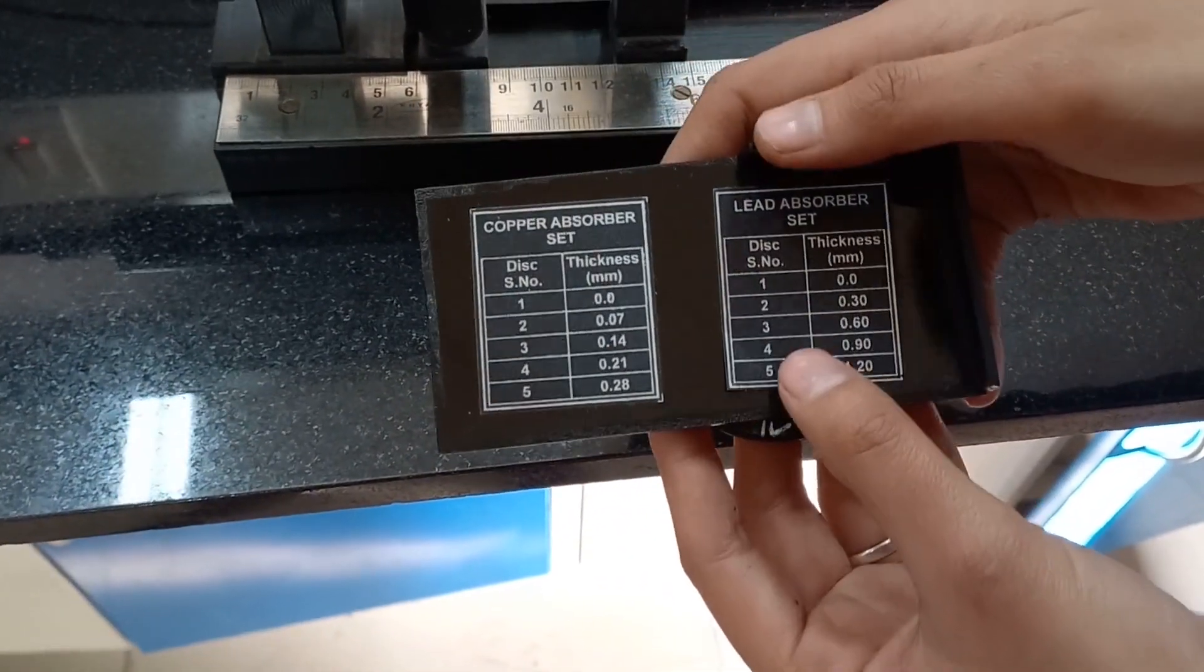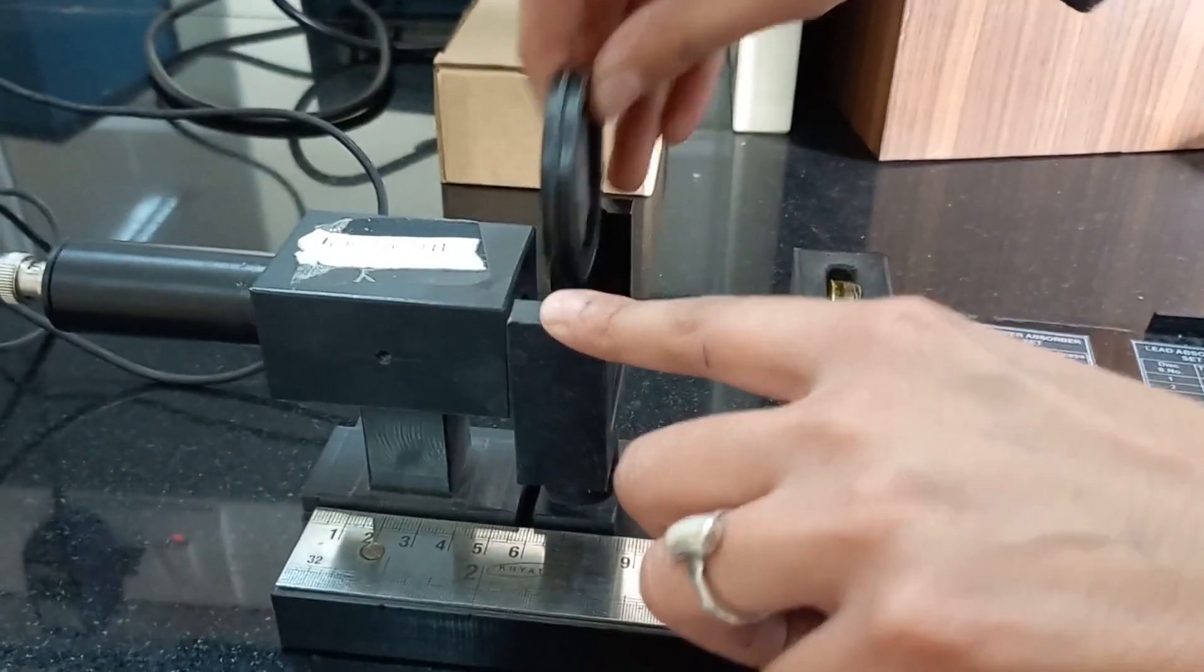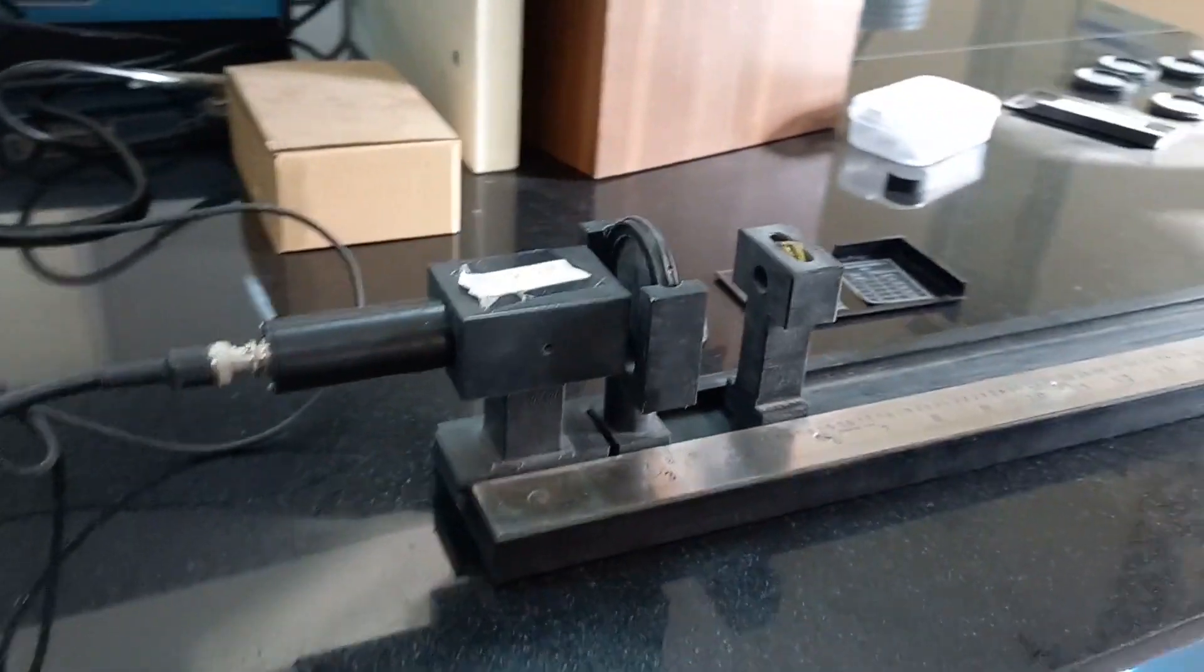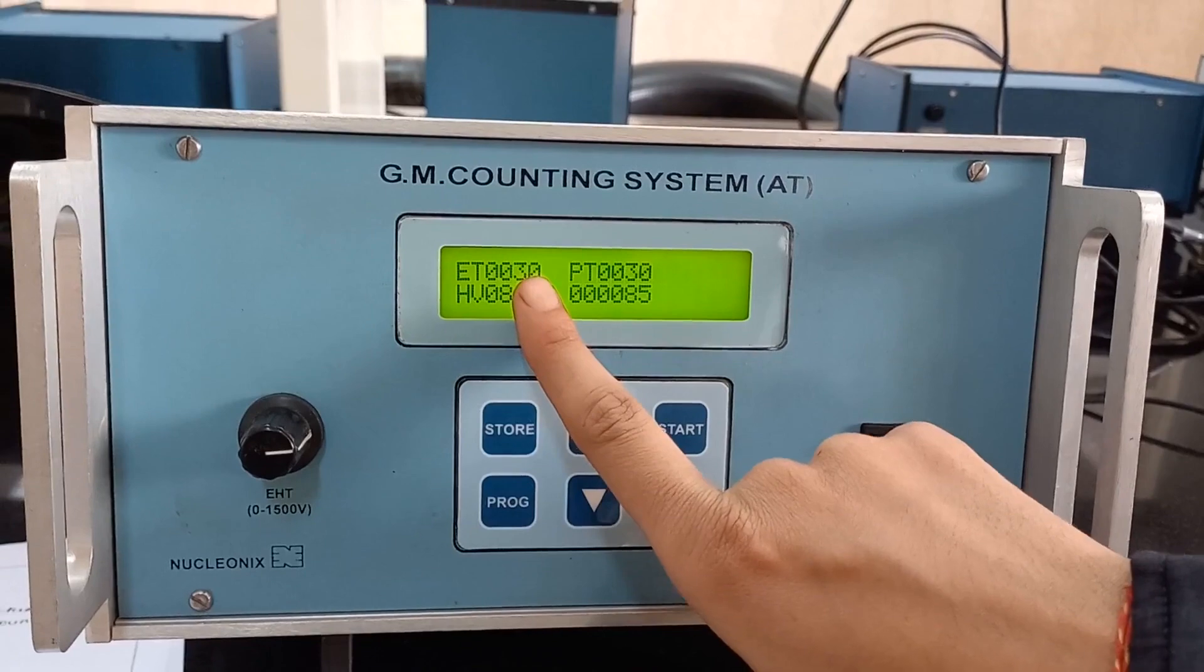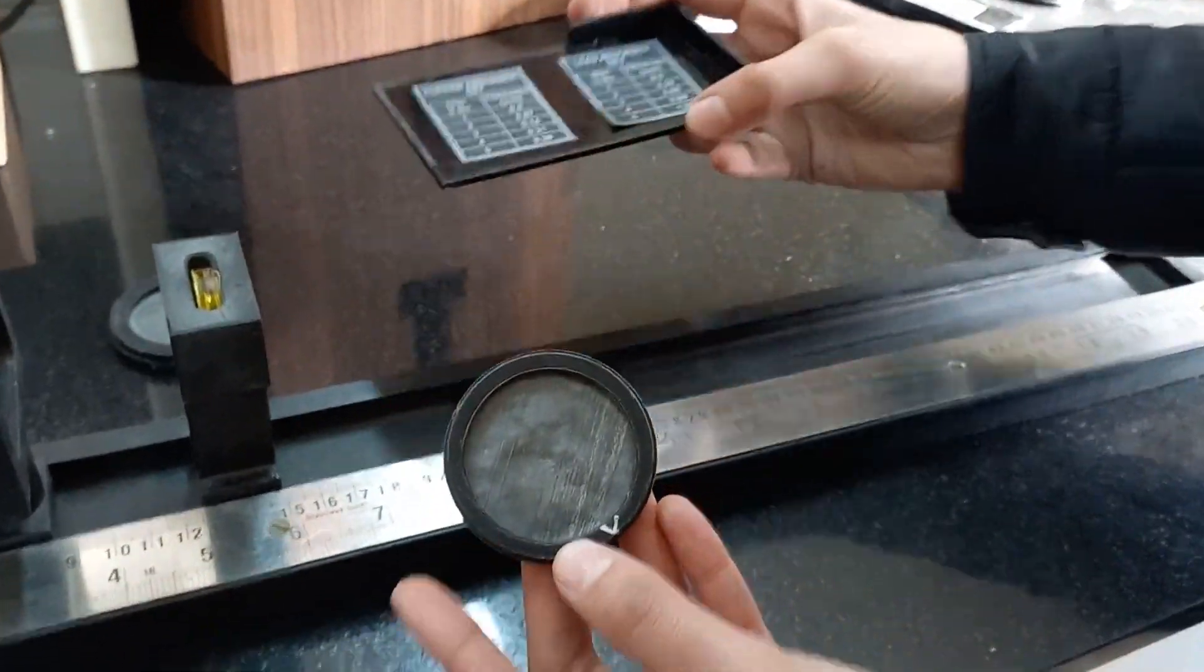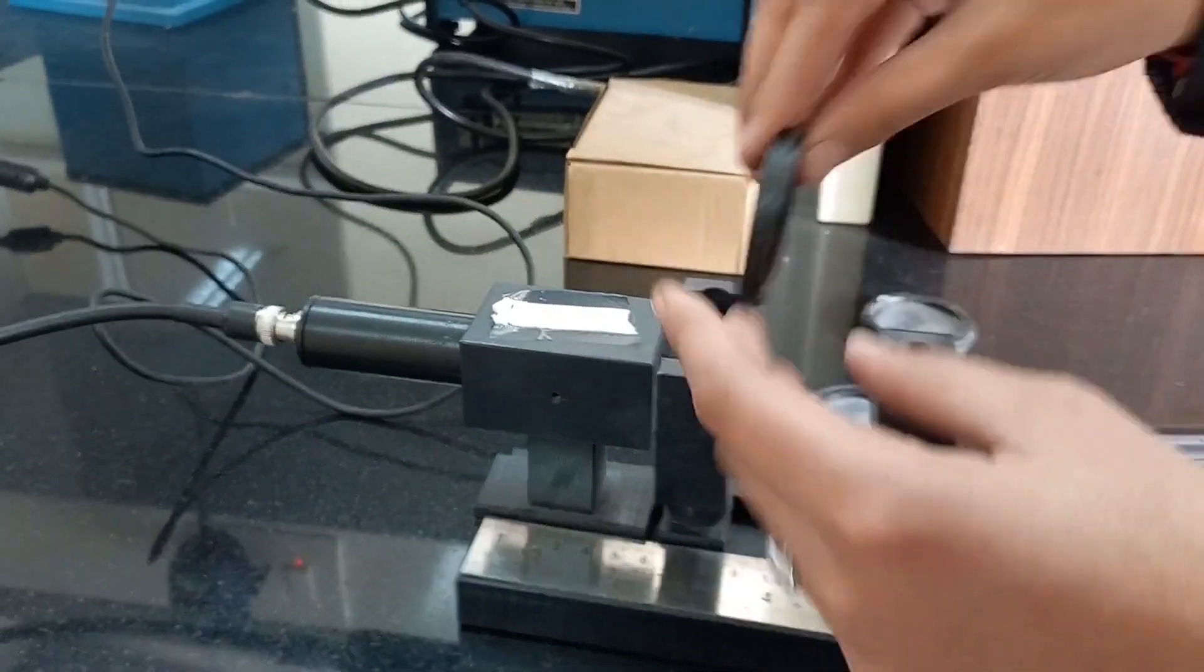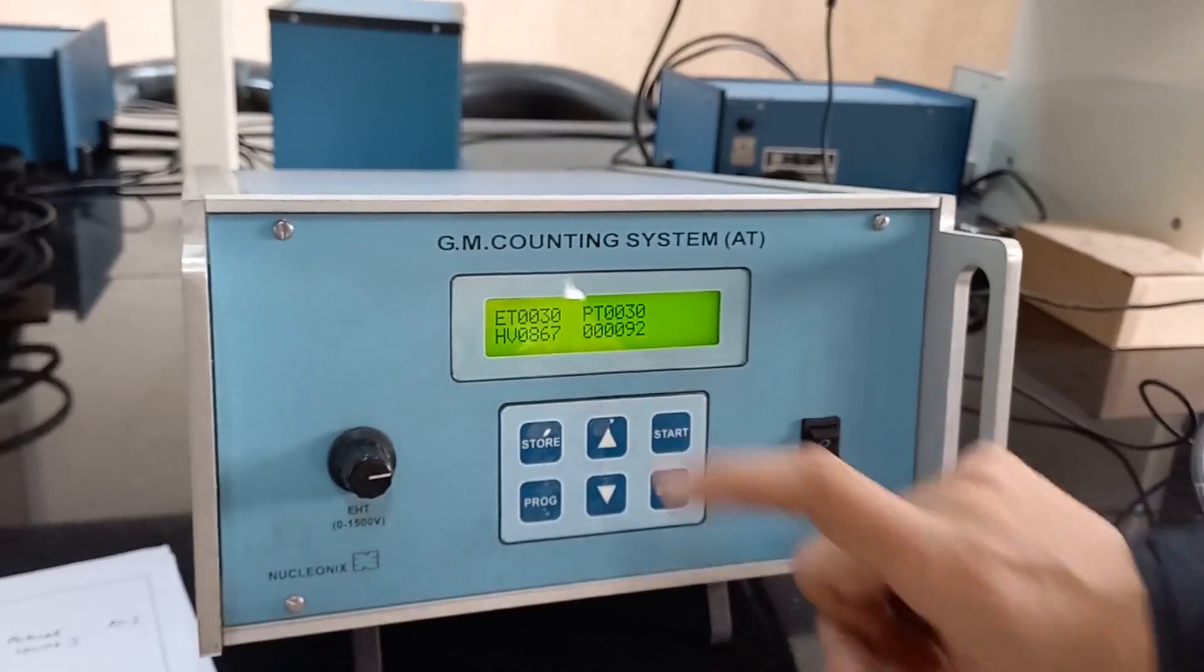For the fourth one, corresponding to the thickness of 0.90, we are going to take this out. Again, start the button. After 30 seconds, it is stopped automatically and the reading is found to be 85 counts. Increase this thickness – we are going to use the fifth one which is having the thickness of 1.20. Again start this button, and the number of counts we found to be 92.